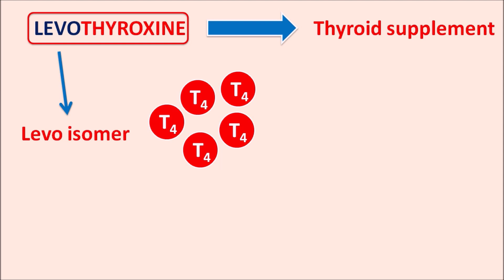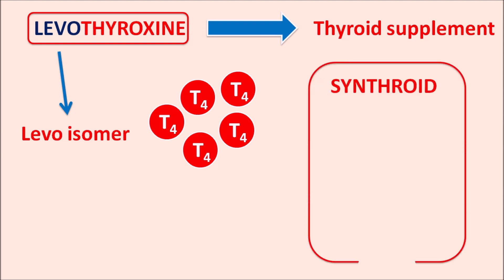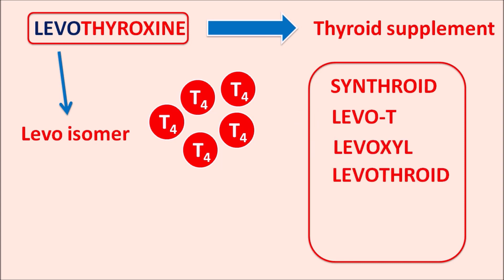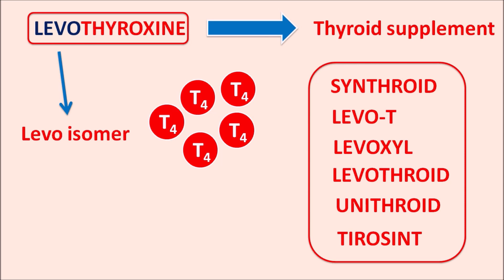Levothyroxine is available with different brand names such as Synthroid, LevoT, LevoXyl, Levothroid, Unithroid, and Tyrosynt. Being a thyroid hormone supplement, this drug is particularly used in conditions where there is a deficiency of thyroid hormones.